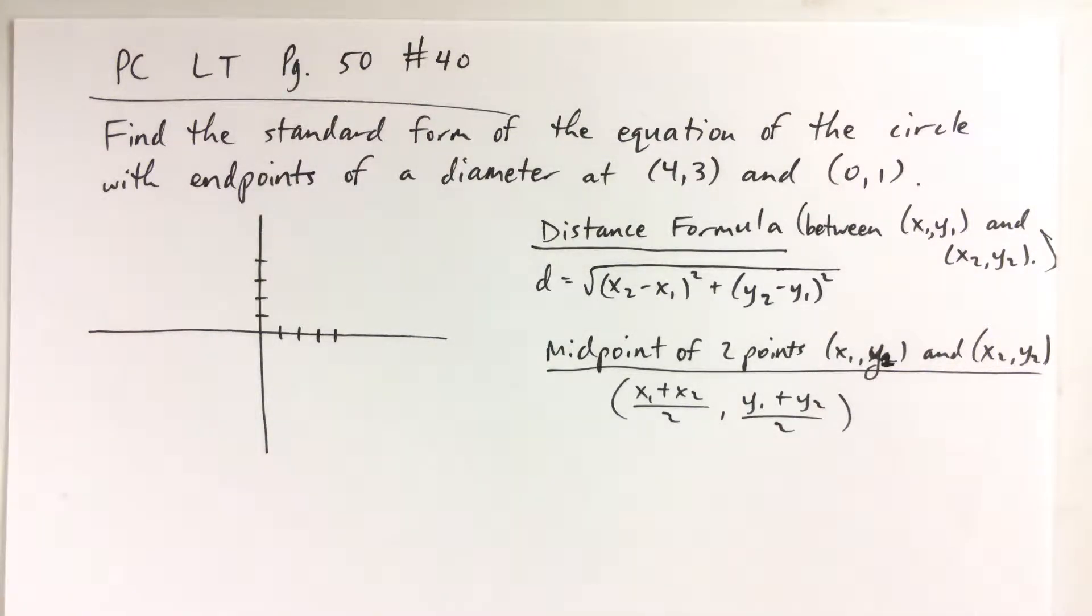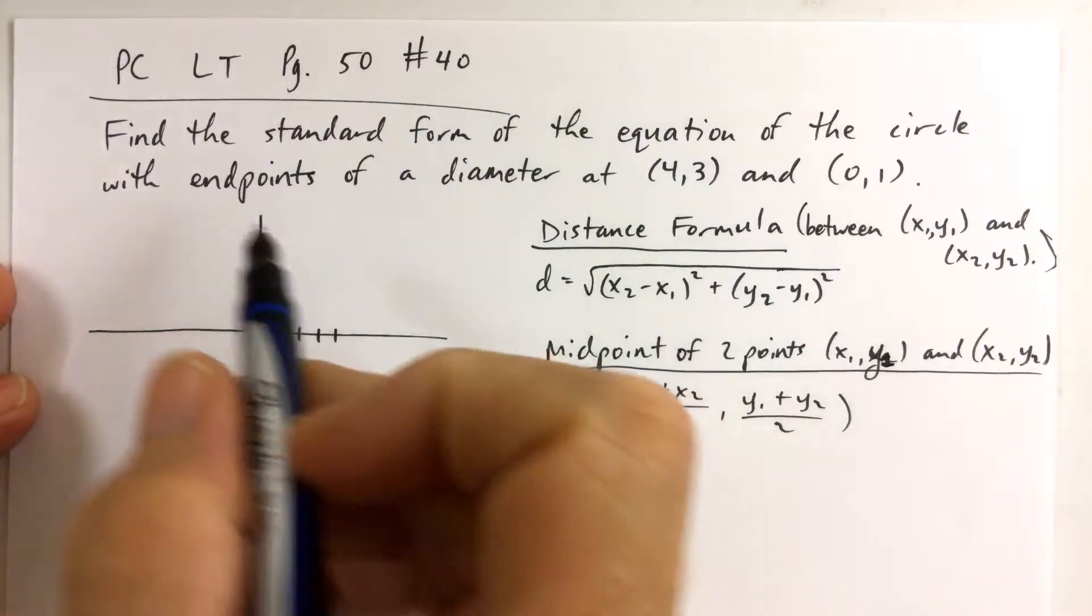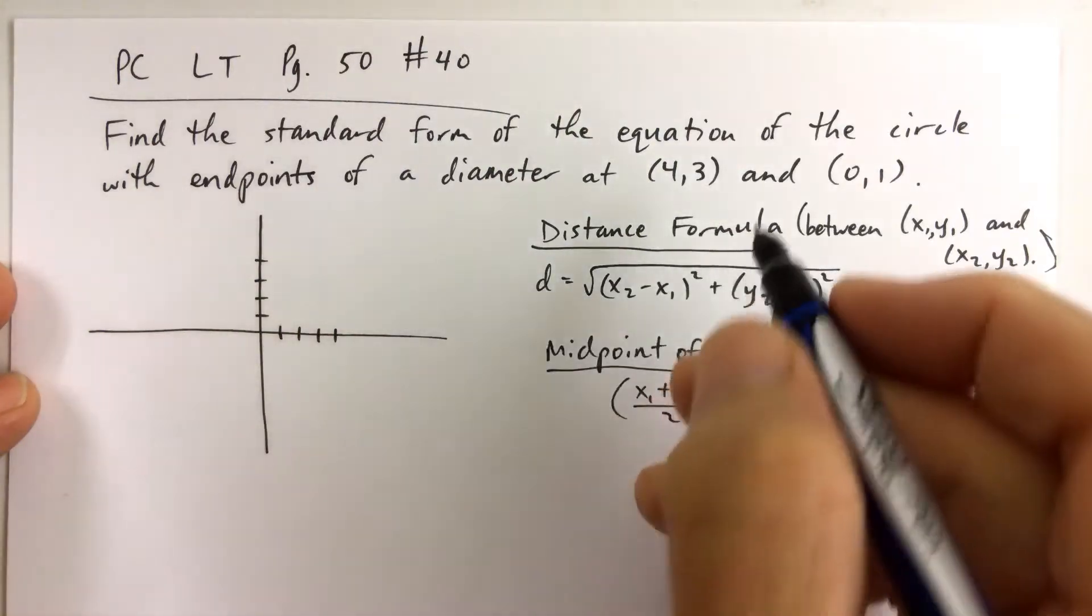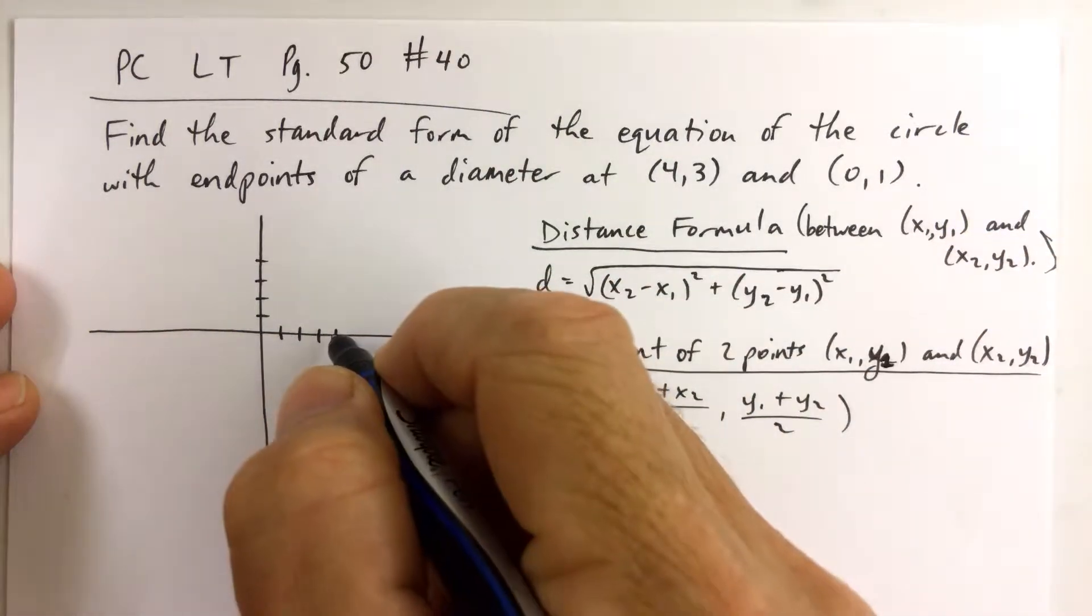Problem 40 is asking us to find the standard form for the equation of the circle that has endpoints of a diameter at (4,3) and (0,1).